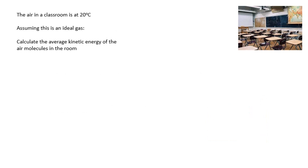Let's have a go at this question here. The air in the classroom is at 20 degrees centigrade. Assuming it's an ideal gas, calculate the average kinetic energy of the air molecules in the room. Well, we know how to do that now. Very simply, it's just 3 over 2 kT. So, bung in the numbers, 6.07 times 10 to the minus 21 joules.